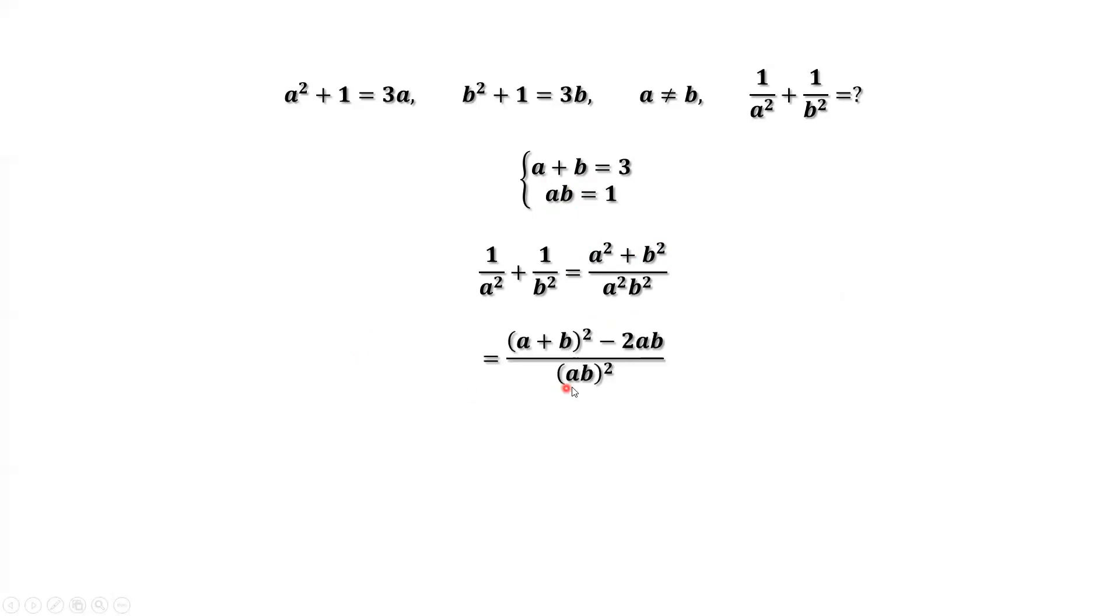The denominator is a times b then squared. The numerator is a plus b squared minus 2ab.